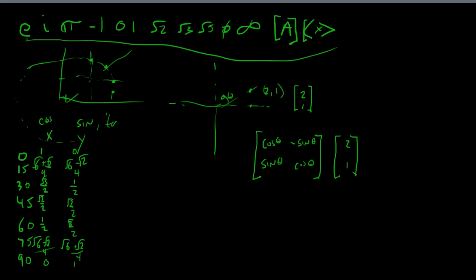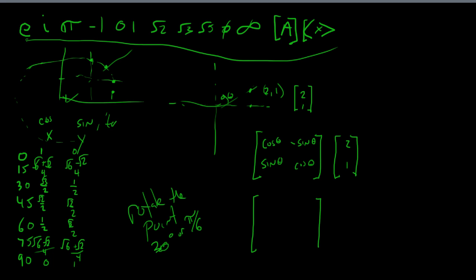So if we're going to rotate the point 30 degrees — or pi over 6 — we fill in: cosine of 30 degrees is the square root of 3 over 2, the sine of 30 degrees is one half, so minus one half here. The sine is still one half and the cosine is the square root of 3 over 2. We then multiply that rotation matrix by the vector 2 and 1 to get the new coordinates.